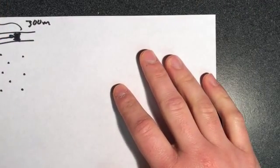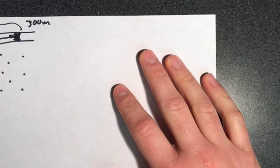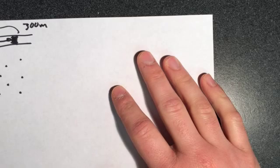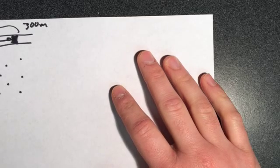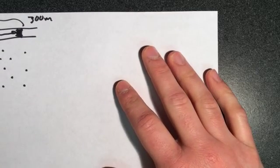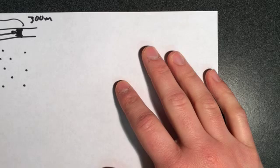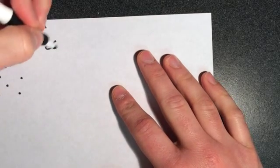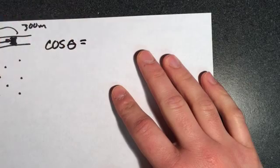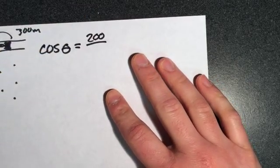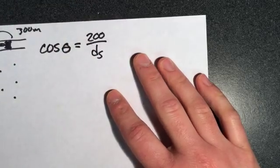ds is the hypotenuse of this triangle here. So let's come up with a trig identity, or a trig function that involves theta, ds, and the number that never changes, which is this 200. So what involves hypotenuse, adjacent, and theta? And the answer is cosine. So cosine of theta is going to be adjacent, or 200 meters, over ds. Now take a second and pause if you didn't follow that and think that through.